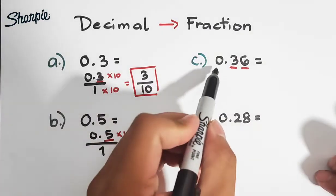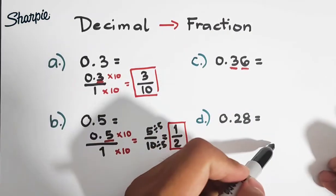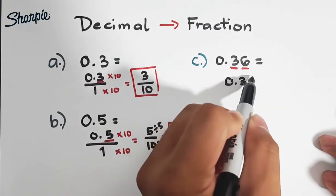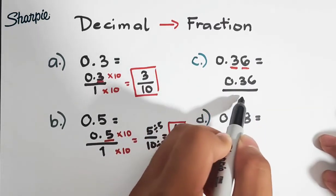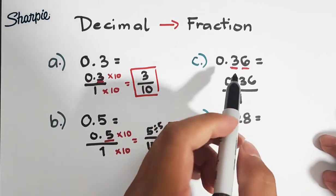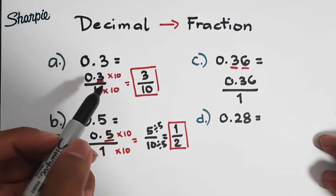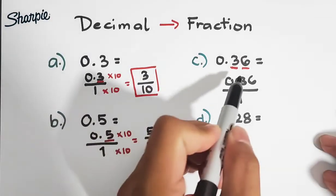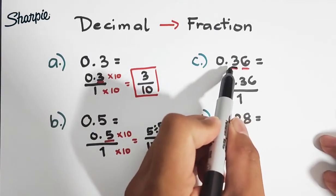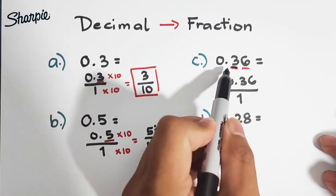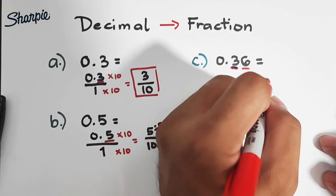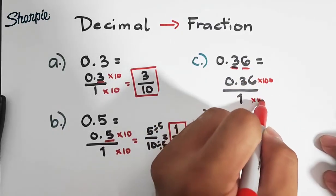In letter C, 0.36, we have 2 decimal values. Now, copy natin 0.36 over 1. Sabi ko kanina, if your decimal value is only 1, multiply it by 10. Pero kapag meron kang dalawang decimal value on the right side of the decimal point, you will multiply it by 100, times 100, and times 100.